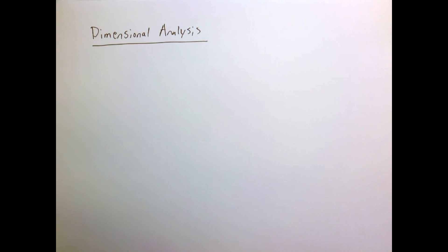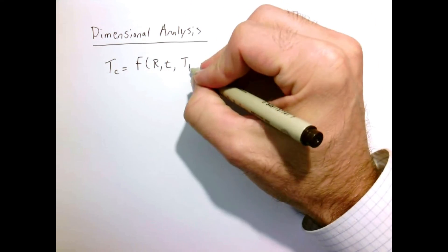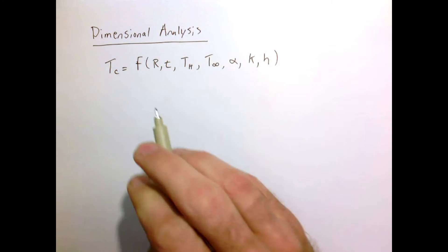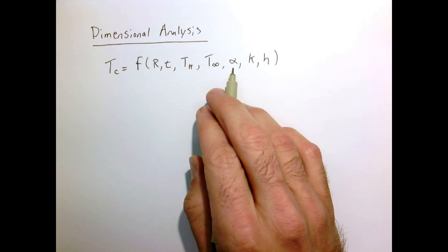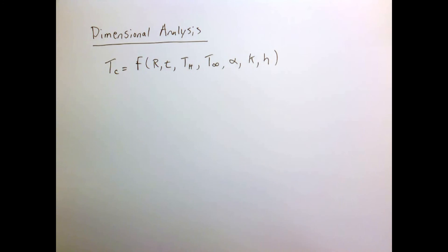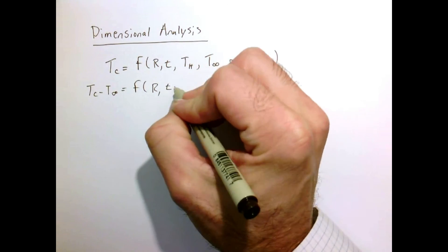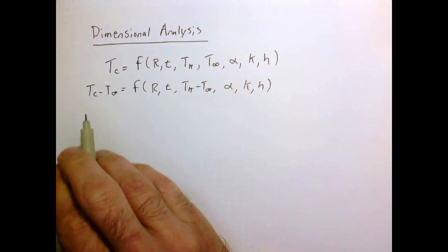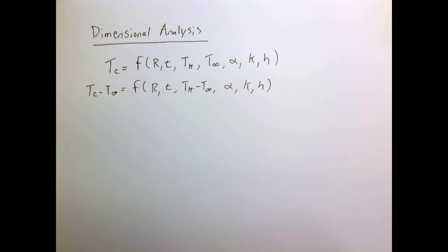Let's see what dimensional analysis tells us about this problem. If I want to know the temperature of the center and look at all the parameters — the radius, time, hot temperature, fluid temperature, thermal diffusivity, thermal conductivity, and convection coefficient — temperatures always appear as temperature differences, so I'll write the center temperature minus the fluid temperature over the hot temperature minus the fluid temperature.